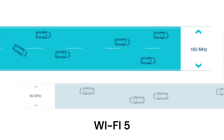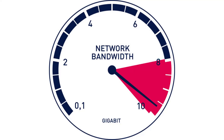Wi-Fi 6 offers more bandwidth on a wider channel. It expands the Wi-Fi band from 80 MHz to 160 MHz, doubling the channel width and creating a faster connection from your router to the device. This means with Wi-Fi 6, large file downloads and uploads will not experience any buffering.